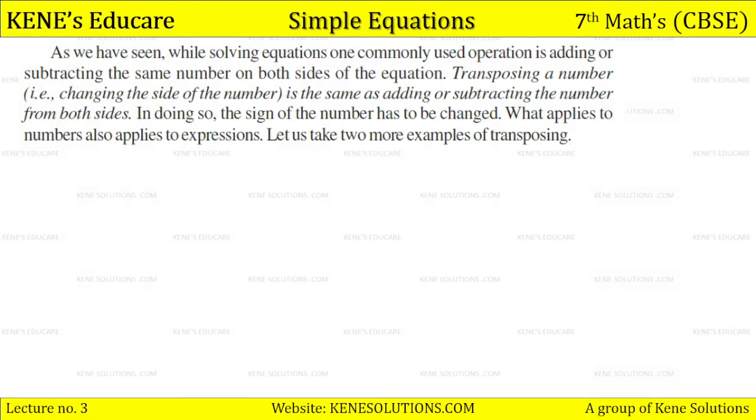As we've seen, while solving equations, a commonly used operation is adding or subtracting the same number on both sides of the equation. Transposing a number, that is changing the side of the number, is the same as adding or subtracting the number from both sides. In transposing, the sign of the number has to be changed. What applies to numbers also applies to expressions.